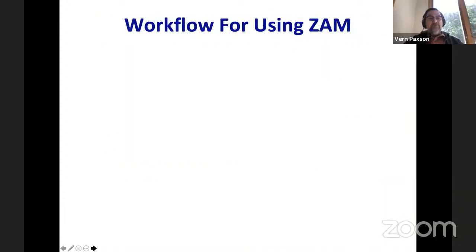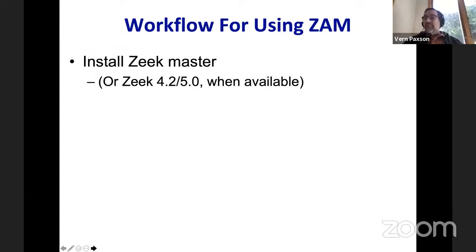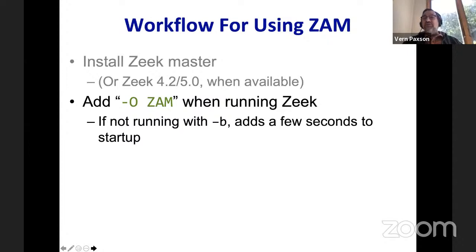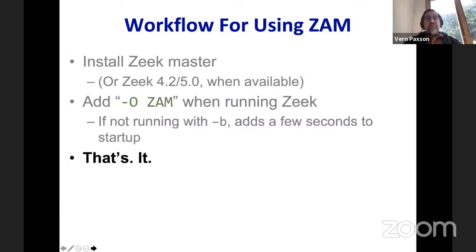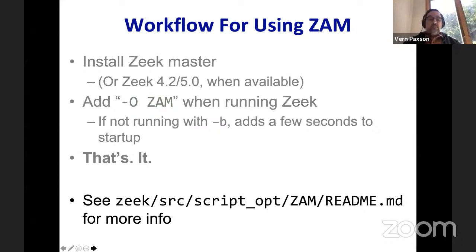How do you use ZAM? You need Zeek master, and it'll be in 4.2 or of course 5.0 when available. You just add on the command line dashes and 'give me ZAM.' If you're not running with the dash-b bare mode flag, it'll take a few seconds to start up because it compiles down to the low-level form — but by a few seconds I mean like five or so depending on your processor. That's it. There's documentation about using it, and both features live in a new subdirectory called script-opt for script optimization, with subdirectories for ZAM and C++.